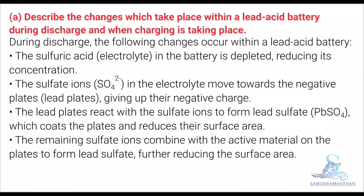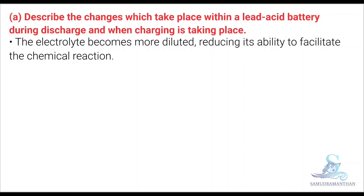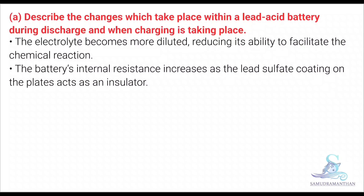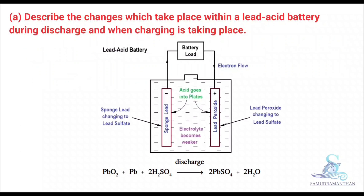The remaining sulphate ions combine with the active material on the plates to form lead sulphate, further reducing the surface area. The electrolyte becomes more diluted, reducing its ability to facilitate the chemical reaction. The battery's internal resistance increases as the lead sulphate coating on the plates acts as an insulator.